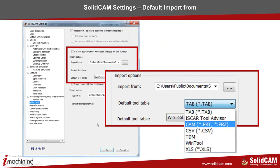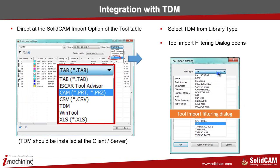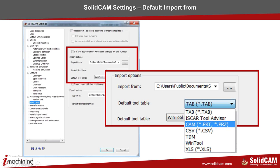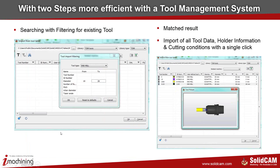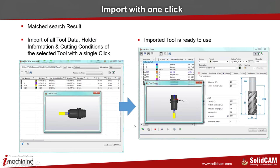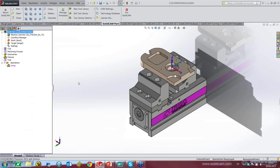We have one global setting in our CAM settings where we can set a default option. If you have TDM or WinTool in your environment, you can set that as the default and skip the interface selection step, importing directly from the user interface. After filtering, we see the result in the import preview from the tool table, and by one click we import the tool to our tool table — ready to use.